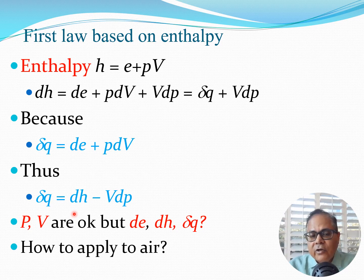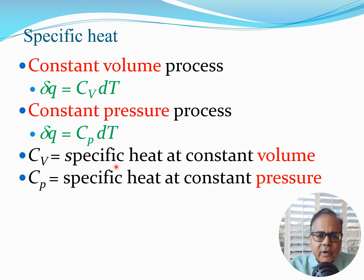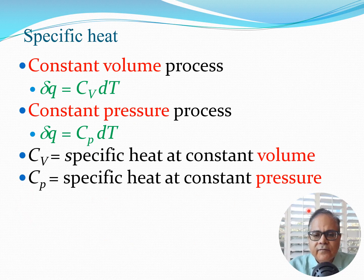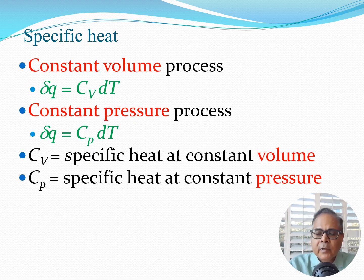To address this, we make approximations using specific heat. For a constant-volume process, δq = cv·dT, and for a constant-pressure process, δq = cp·dT, where cv is the specific heat at constant volume and cp is the specific heat at constant pressure. These are properties that air possesses.